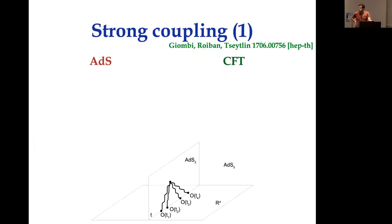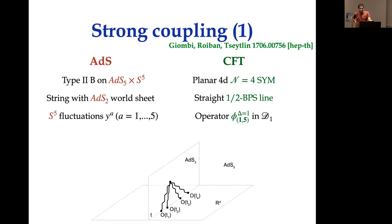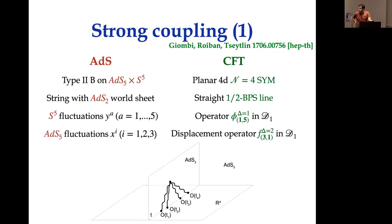We can also study the theory at strong coupling, first discussed in a paper by Giombi, Roiban, and Tseytlin, and also discussed by Gabriel in the last talk. Using the AdS/CFT correspondence, planar N=4 super Yang-Mills is dual to Type IIB string theory on AdS5 × S5. When we take a straight half-BPS line in N=4, this is dual to a superstring with an AdS2 worldsheet. Perturbing this configuration by inserting local operators — the five scalars not coupled to the line — corresponds to excitations along the S5 directions of the string.